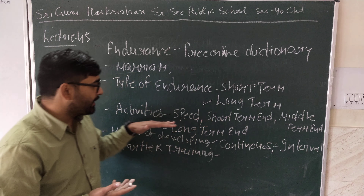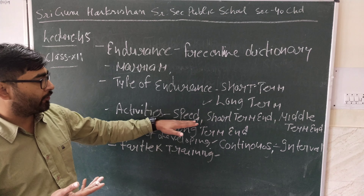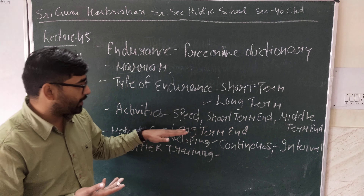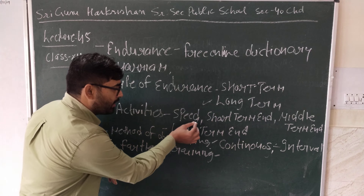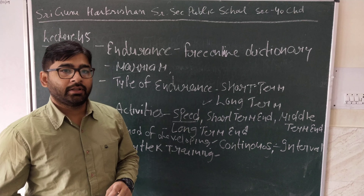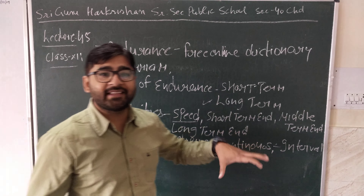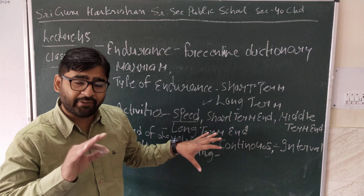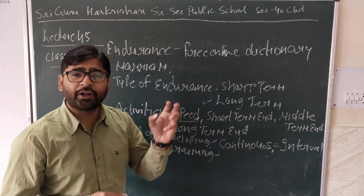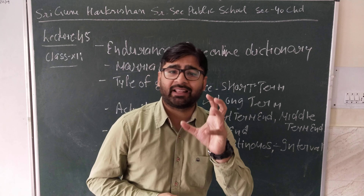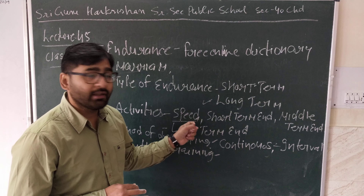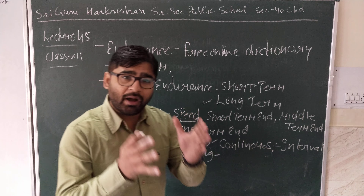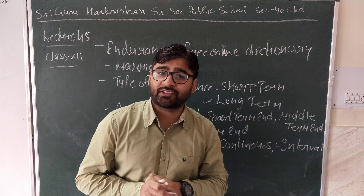Now we discuss about four activity-based types of endurance: speed endurance, short-term endurance, mid-term endurance, and long-term endurance. Speed endurance is the ability to maintain peak speed in activity lasting up to 45 seconds. The 400 meter sprint is the most suitable example of speed endurance. Speed endurance is mainly dependent on the power and capacity of the energy conduction system.